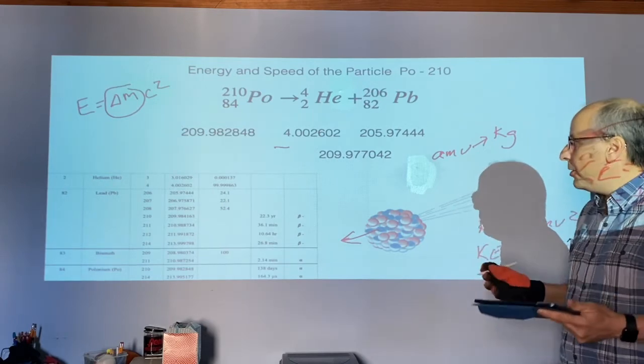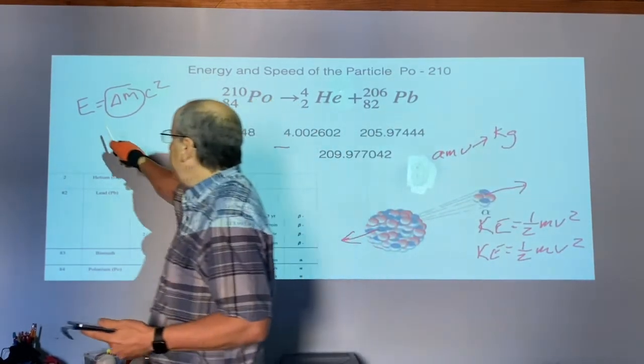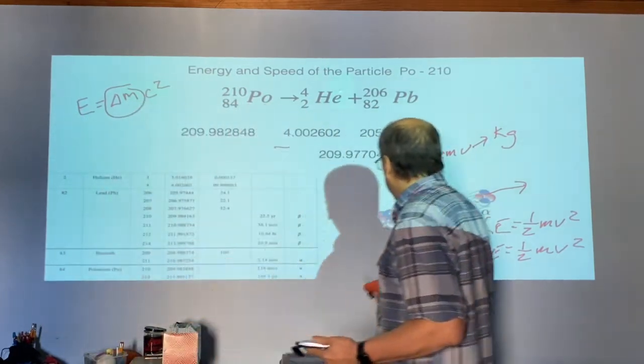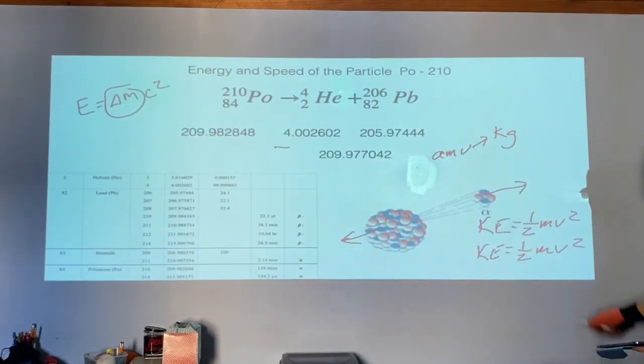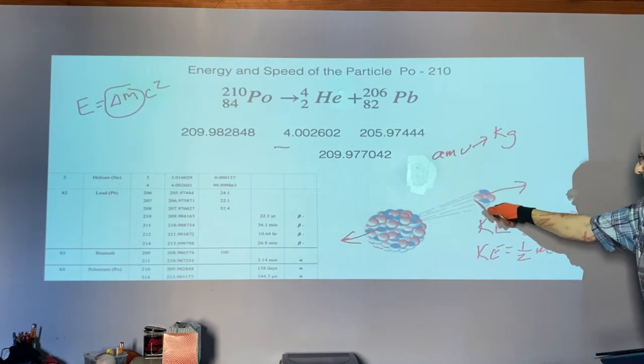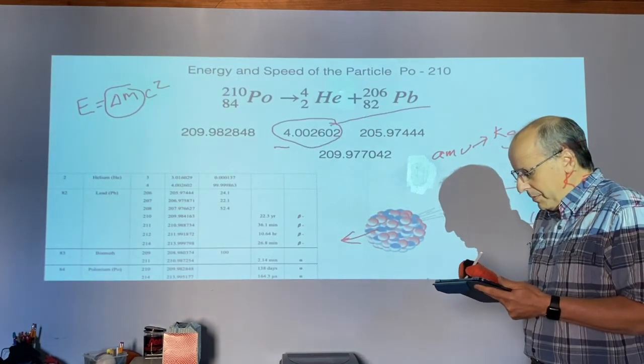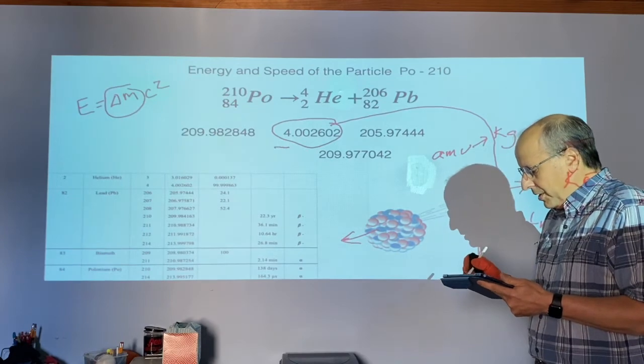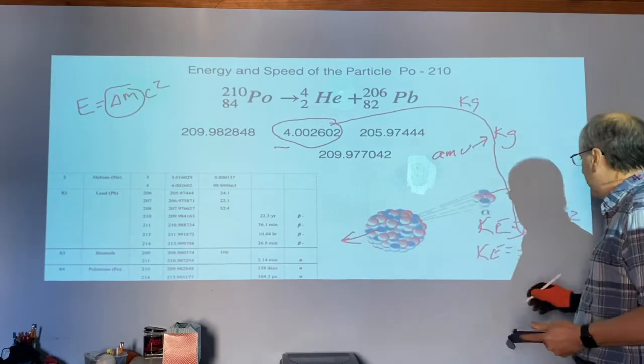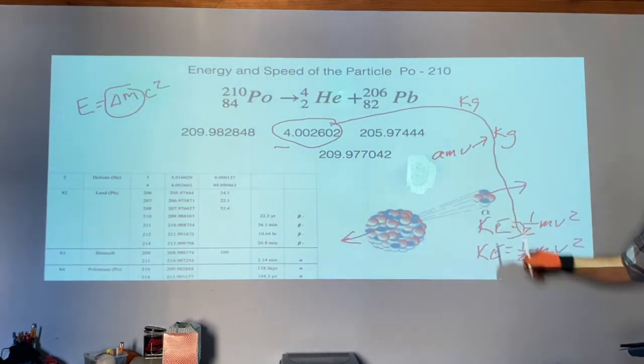And what you're going to do is take the kinetic energy from here. You're going to plug it in here. The mass, you're going to use the mass of the alpha particle. Don't use it in AMU. Convert it over to kilograms. And then solve for the speed of this particle.